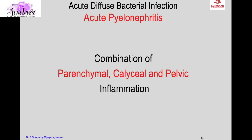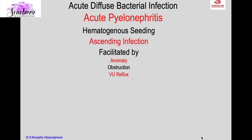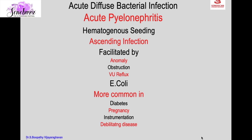Acute diffuse bacterial infection of the kidney, otherwise called acute pyelonephritis, is a combination of parenchymal, calyceal, and pelvic inflammation. It may be hematogenous seeding, though not common; usually it is an ascending infection facilitated by an anomaly, obstruction, or vesicoureteric reflux. The causative organism is usually E. coli, more common in diabetics, pregnancy, after instrumentation, debilitating disease, altered host resistance, and drug abuse.